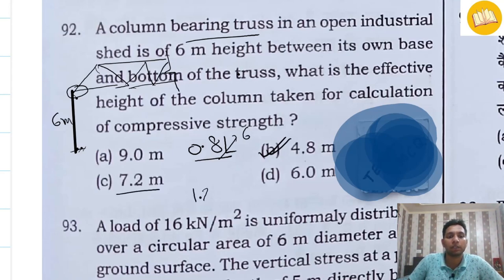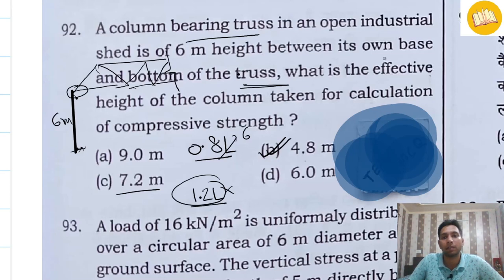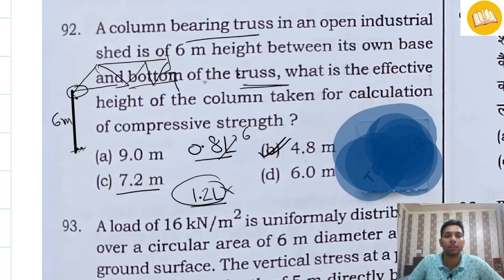Some people are giving the answer as 1.2L, which is actually wrong. The truss is resting over the column, which changes the support condition, making it 0.8L and not 1.2L. The correct answer is 4.8 meters, not 7.2 meters.